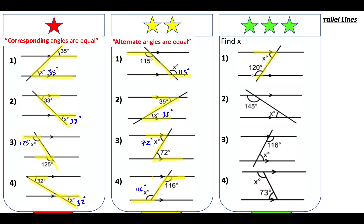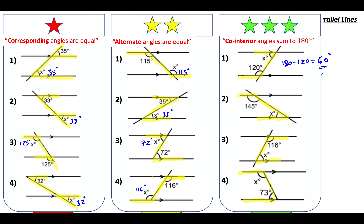The last set: highlight round each pair and you get a C shape — possibly backwards — so they are all co-interior angles and co-interior angles sum to 180. So each time do 180 take away the given angle: 180 − 120 = 60 degrees, 180 − 145 = 35 degrees, 180 − 116 = 64 degrees, and 180 − 73 = 107 degrees.